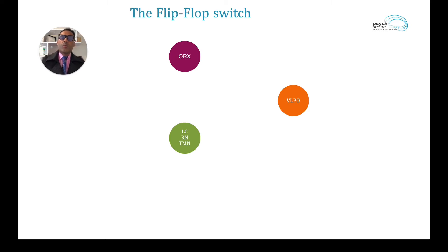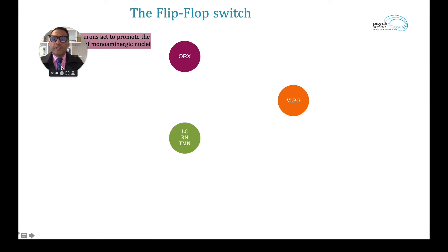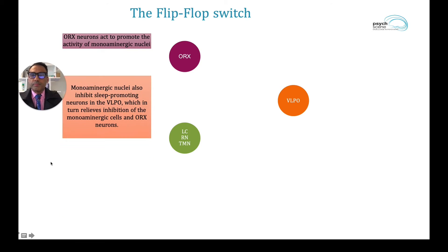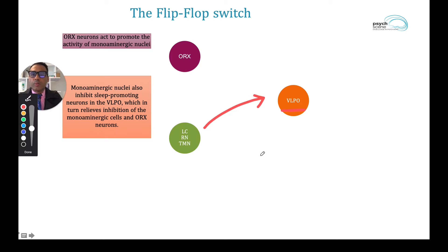There is another important process in the sleep-wake cycle known as the flip-flop switch. The three key elements in the flip-flop switch are orexin neurons, the locus coeruleus and raphe nucleus, and the tubero-mammillary nucleus (TMN), and the ventrolateral preoptic neurons, which I'll be calling the VLPO.